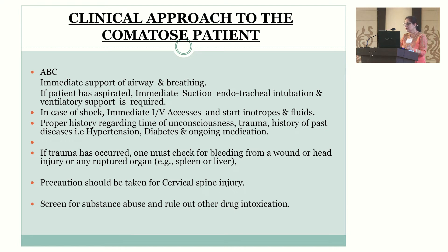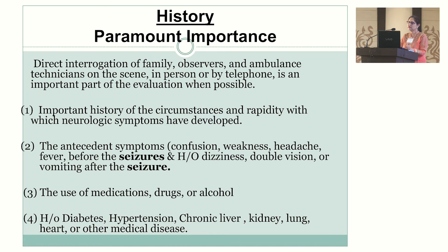Considering the patient's age helps narrow the diagnosis — an old patient is less likely to be on IV heroin, more likely opium. History is of paramount importance and can be taken from family, observers, ambulance technicians, or even by telephone. With nuclear families, the person living with the patient may not have come, so ask about the circumstances of where the patient was last seen.